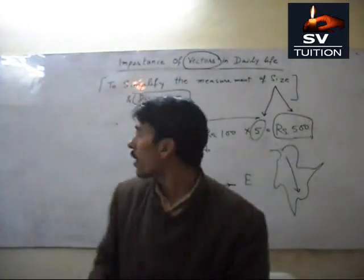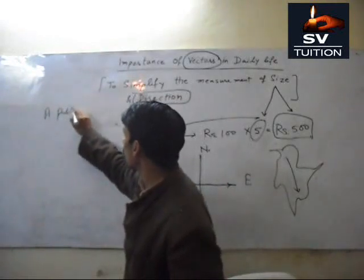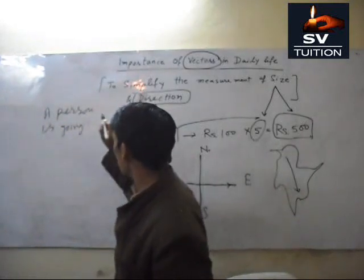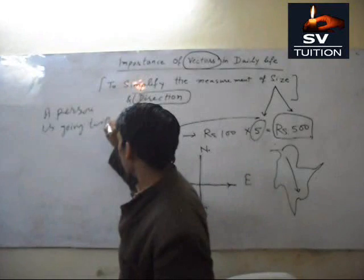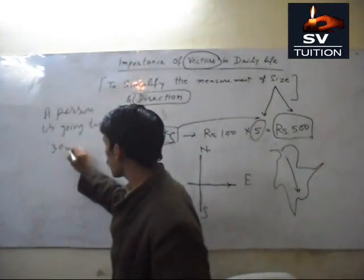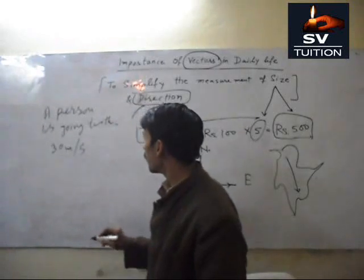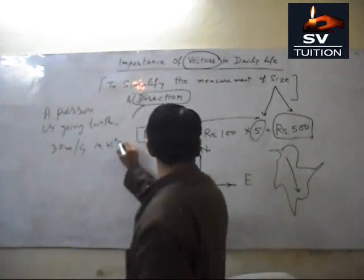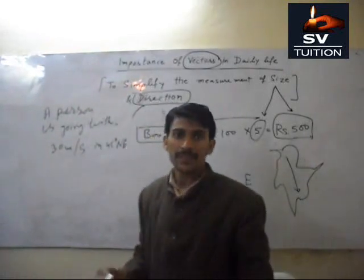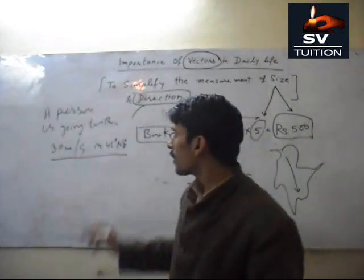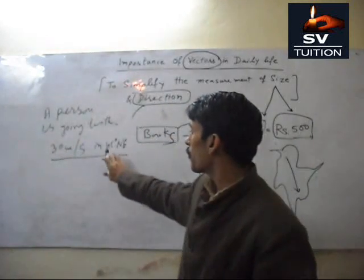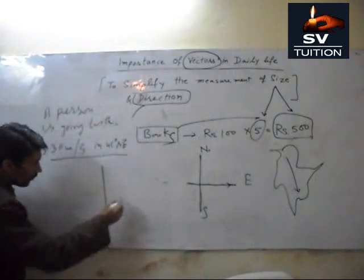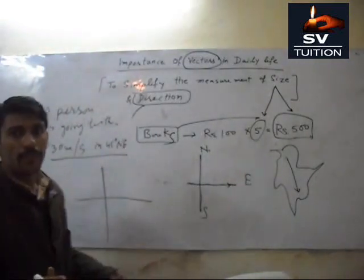I will explain it. Suppose, a person is going with 30 meters per second in 45 degree North-East. It is very difficult. What is this quantity? 30 meters per second in 45 degree North and East. But when we will show in the vector, it will become very easy.